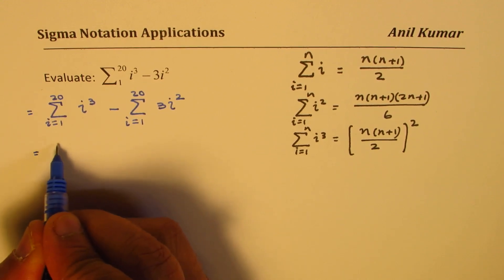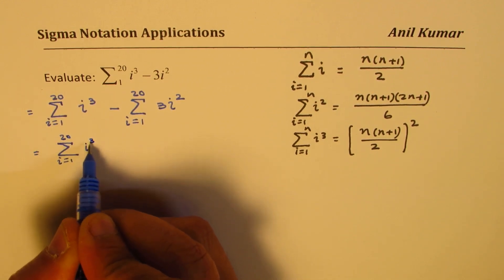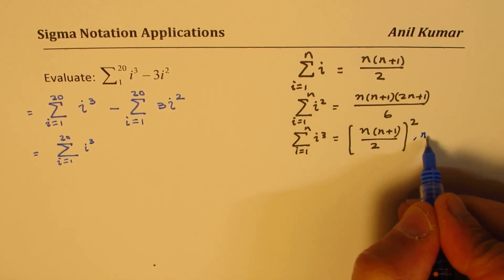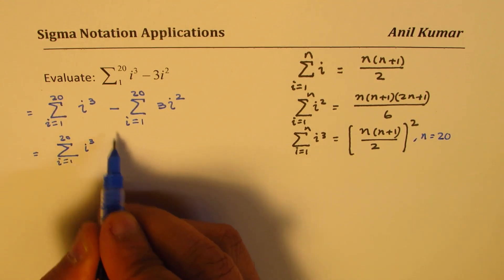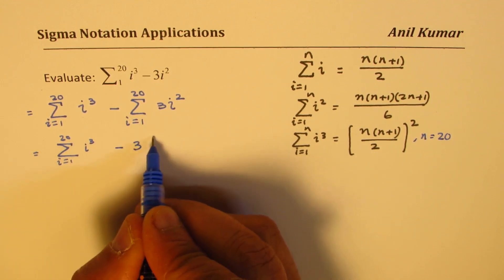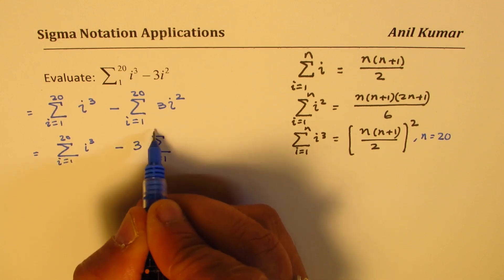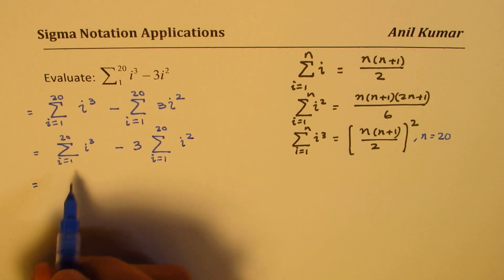So we could actually write this as sum from i equals 1 to 20 for i cubed. We will substitute this formula using n equals 20. So we can substitute 20 here. Minus this one, 3 is a constant. So we can bring constant outside and rewrite our formula, which is sum from i 1 to 20, 1 to 20, for squares.